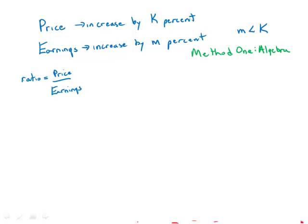In this video I'm going to show an algebraic approach. Let's say that P is the price and E is the earnings, so the original ratio was just P over E.